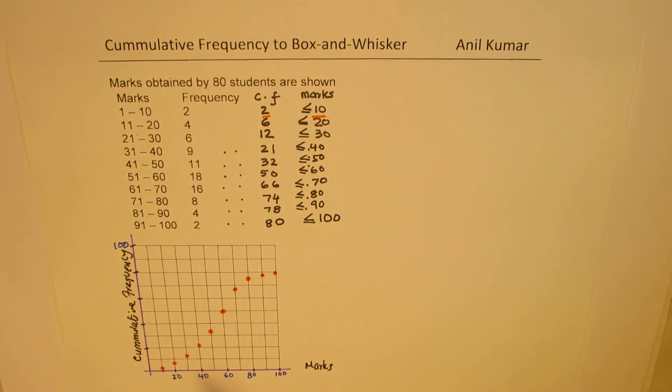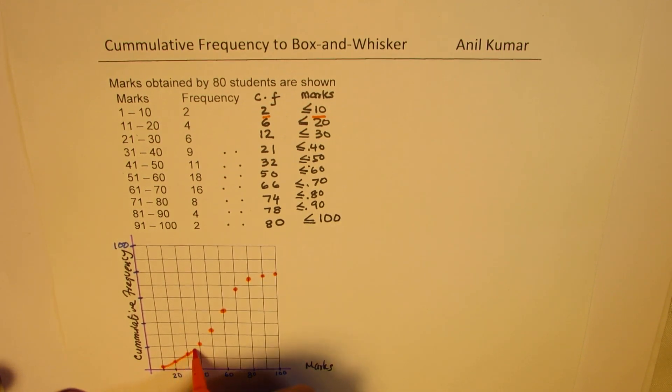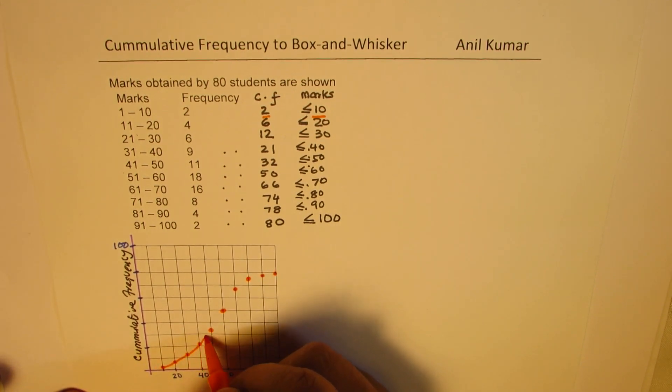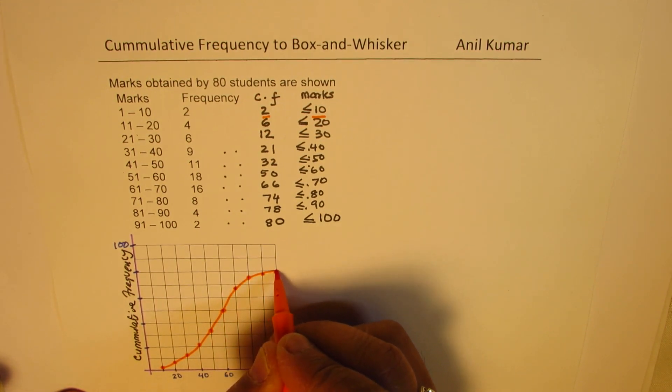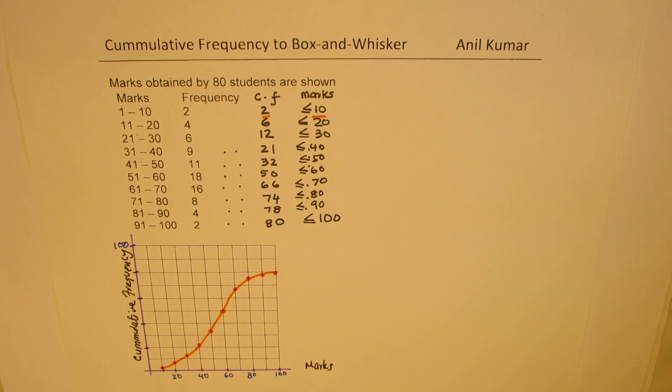We get this graph, which is a cumulative frequency. Normally, you will see this as an S-shaped graph. Fairly accurately, it has been drawn here. So, that becomes the graph.